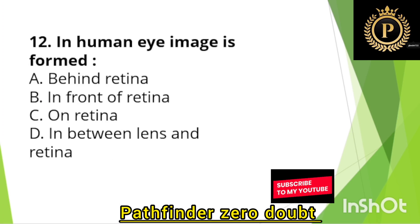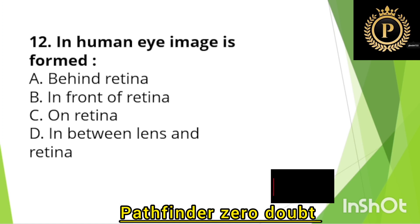In the human eye, the image is formed on — Option C: Retina.